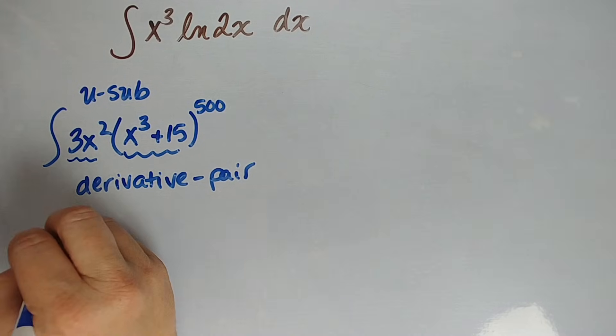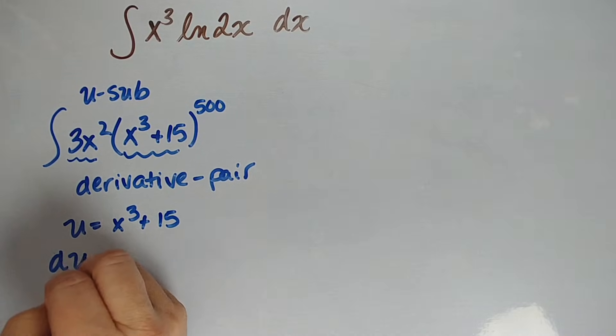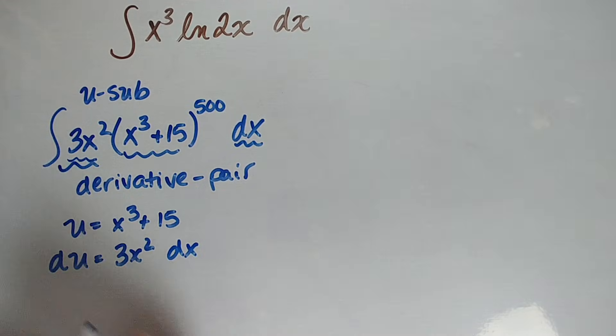This is when you want to say, I'm going to let u be this x cubed plus 15, and if I notice du is 3x squared dx, well, look at that. I have a dx and I have a 3x squared. That's how you know u-substitution is going to be used there.